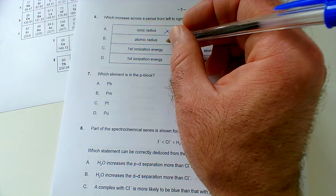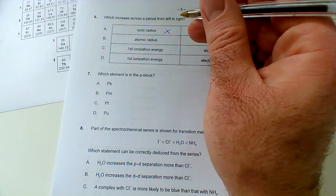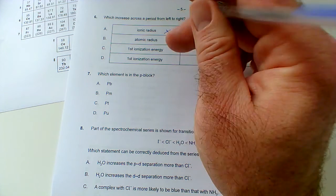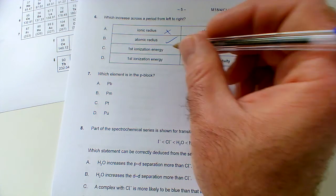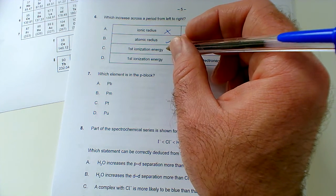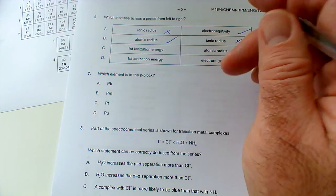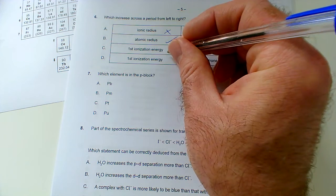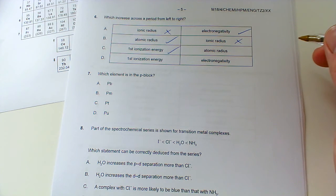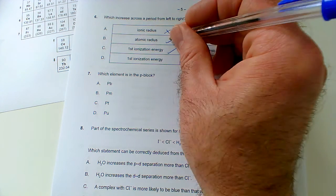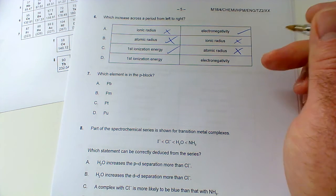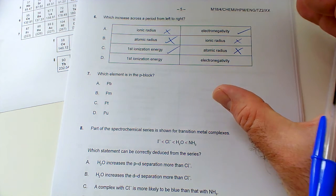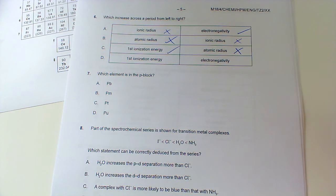Electronegativity does increase from left to right because the atoms get smaller and so it's easier to attract a bonding pair of electrons which are in the outermost shell. Atomic radius, that decreases left to right because the bigger nuclear charge pulls the electron shells in more tightly. Ionic radius, again we've discounted that one already. First ionization energy, that increases from left to right because the bigger nuclear charge attracts the outer electrons more strongly. And atomic radius decreases because you write electrons in the same shell, the bigger nuclear charge pulls them in tighter so the atom is smaller.